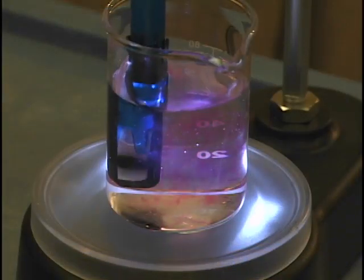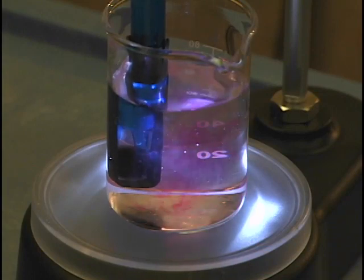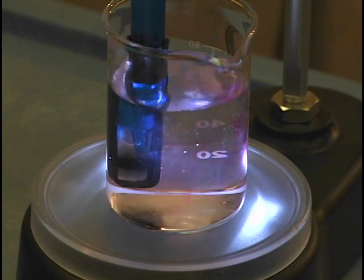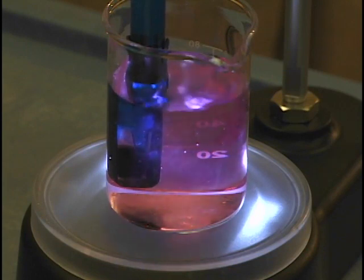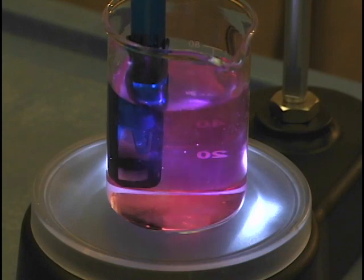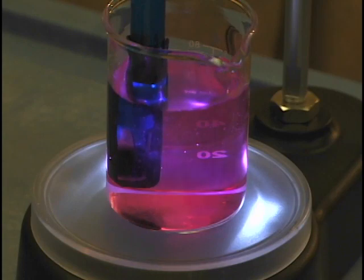I put some phenolphthalein in here and you can see as each drop goes in we're getting some pink. It's lingering longer with each drop so we're really close to the equivalence point now. It looks like we are there. We'll let it keep dropping a little while longer so we can get an upper tail on our titration curve and come back and analyze it.